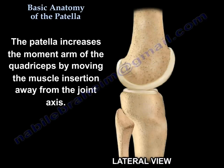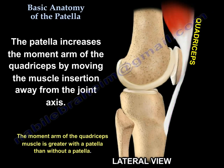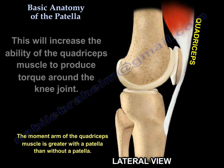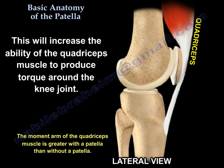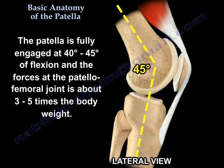The patella increases the moment arm of the quadriceps by moving the muscle insertion away from the joint axis. This increases the ability of the quadriceps to produce torque around the knee joint. The patella is fully engaged at 40 to 45 degrees of flexion, and the forces at the patellofemoral joint are about 3 to 5 times the body weight.